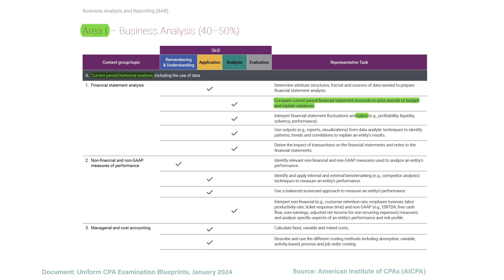Then we have non-financial and non-GAAP measures of performance. This could include benchmarking to compare yourself to your competitors, using different measures like customer retention rates or employee turnover, or using non-GAAP ratios like EBITDA ratio or core earnings ratios — and how we can use these different tools to analyze a company.